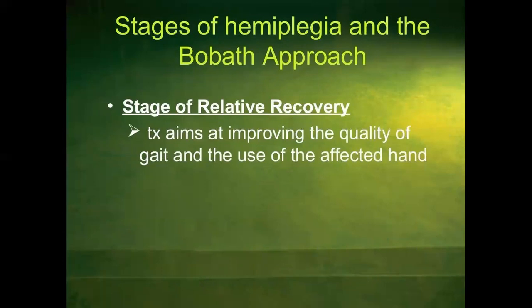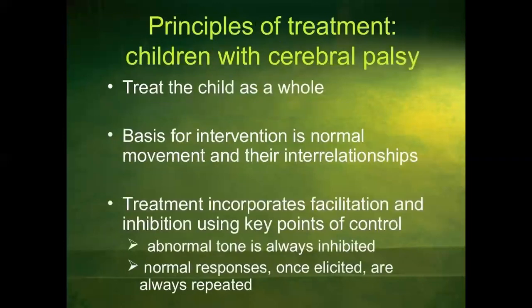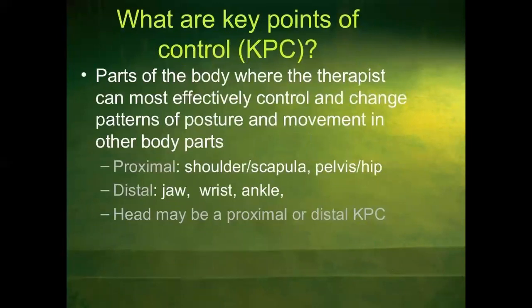Stage of relative recovery: treatment aims at improving the quality of grasp and the use of the effective hand. Principles of treatment for children with cerebral palsy: treat the child as a whole; the basis for intervention is normal movement and their interrelationships; treatment incorporates facilitation and inhibition using key points of control; abnormal tone is always inhibited; normal responses once elicited are always repeated. Key points of control (KPC) are the parts of the body where the therapist can most effectively control and change the pattern of posture and movement in other body parts.